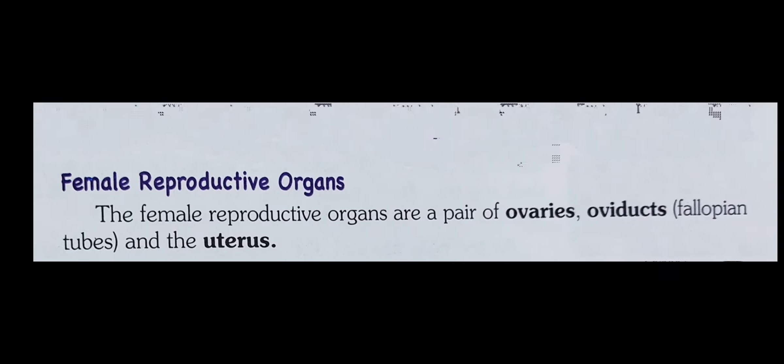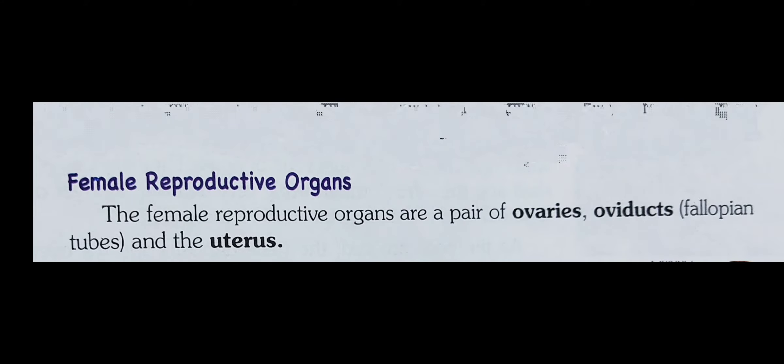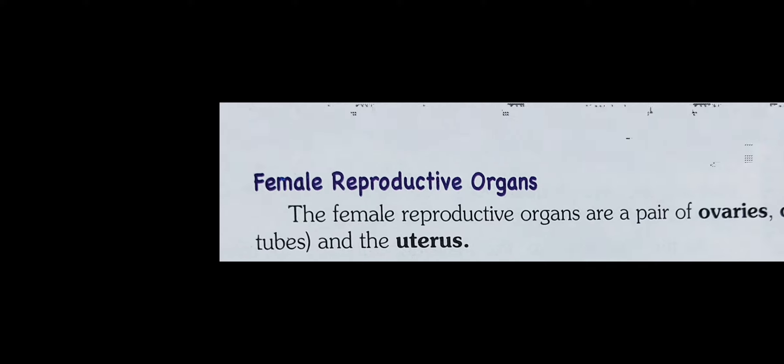Next are the female reproductive organs. The female reproductive organs are a pair of ovaries, oviducts, and the uterus.